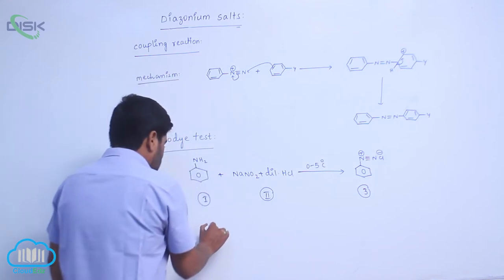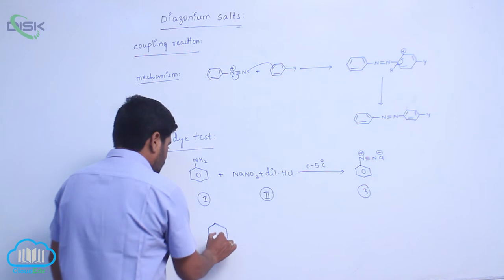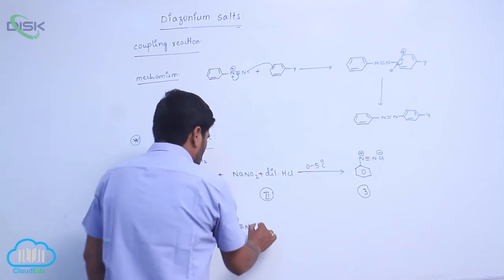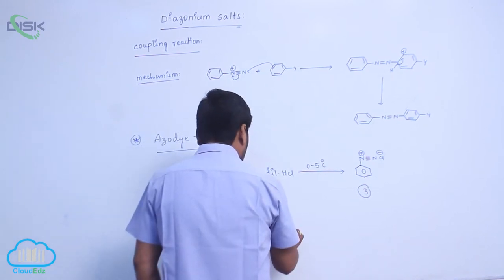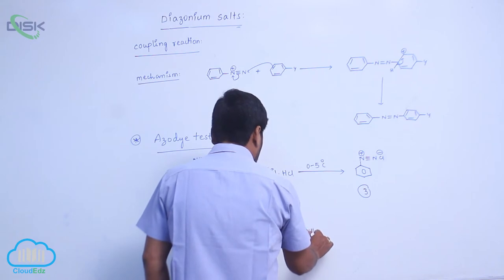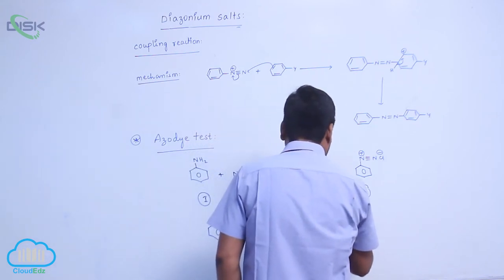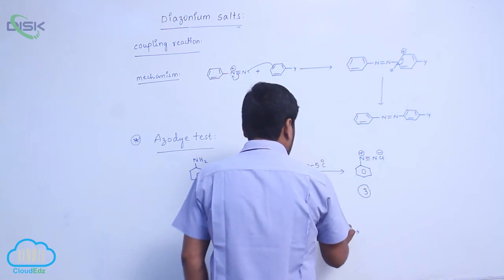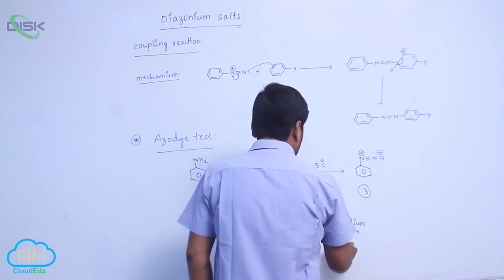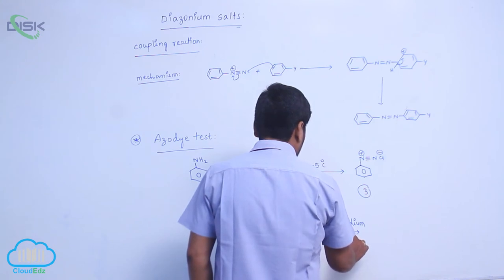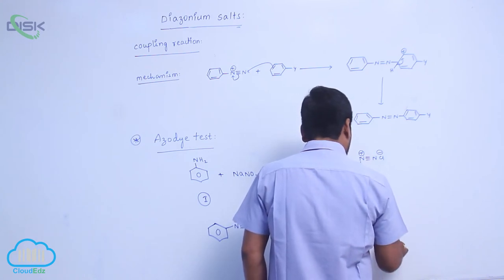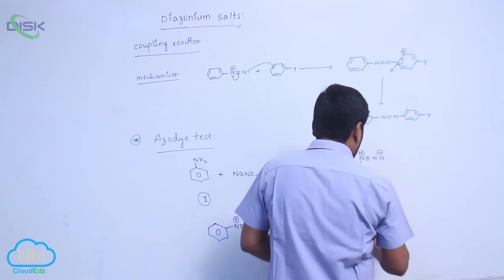This third compound reactivates, N triple bond N R positive charge Cl minus. Again, it is which solution? Aniline solution. Which medium? Acid medium, pH equals to 2 to 4. Now it forms a yellow color dye.